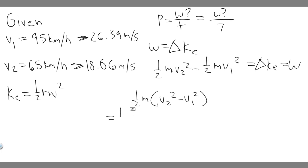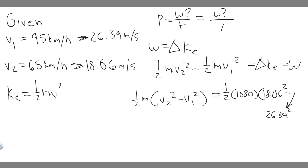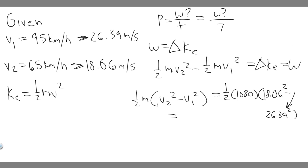Plugging in the values: the mass is 1080 kilograms, v2 is 18.06 m/s, and v1 is 26.39 m/s. So we calculate: ½ × 1080 × (18.06² − 26.39²). Doing this calculation gives us the work, which equals −1.999 × 10⁵ joules.